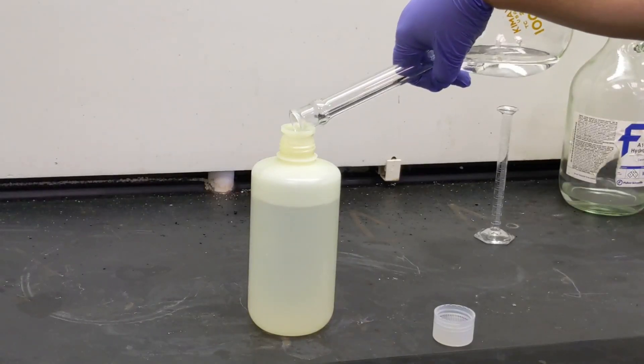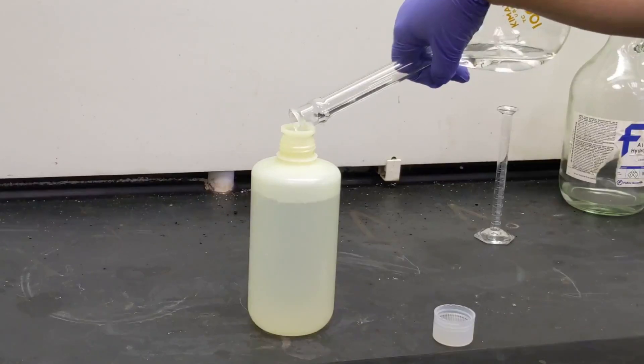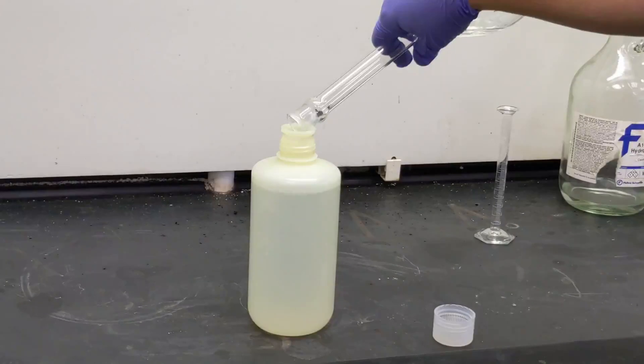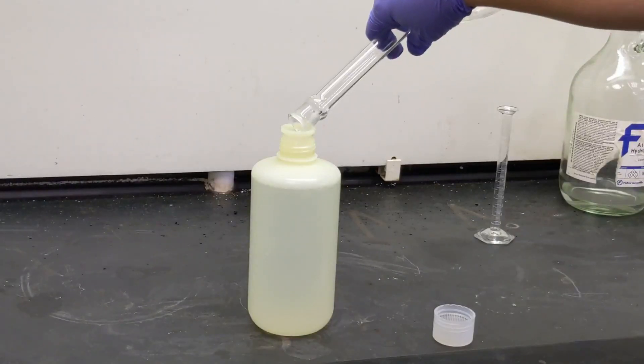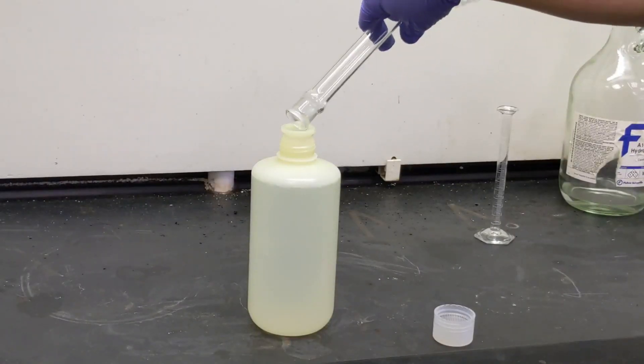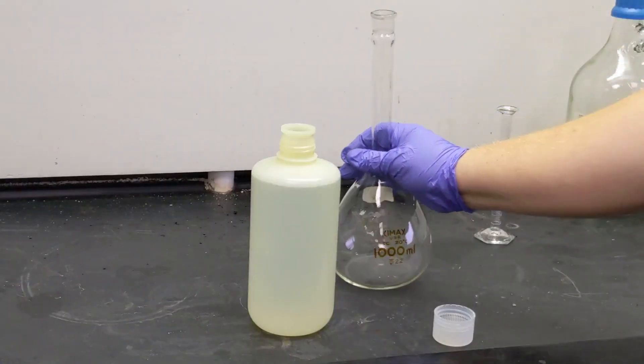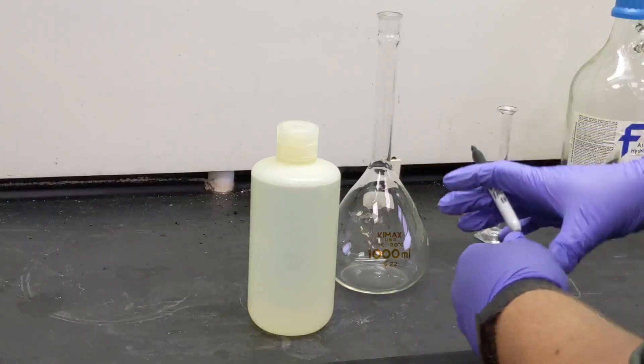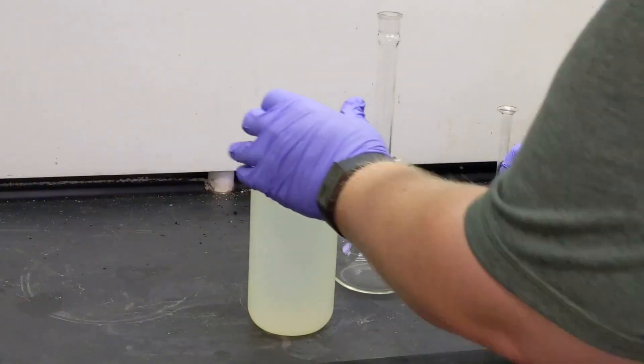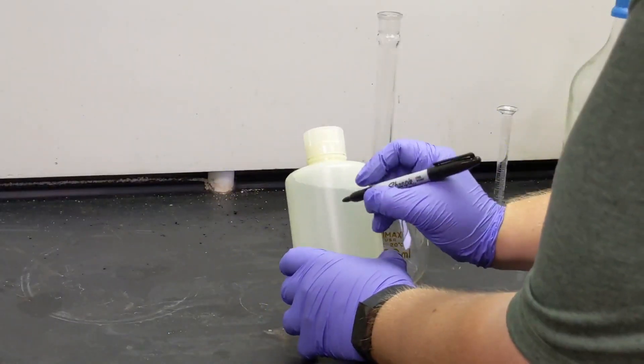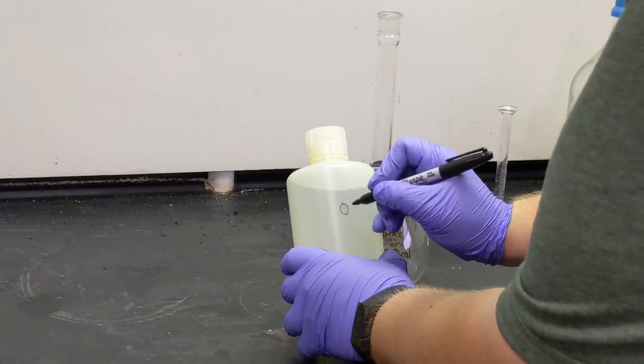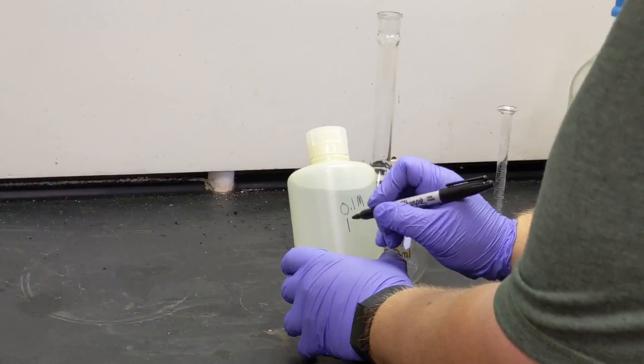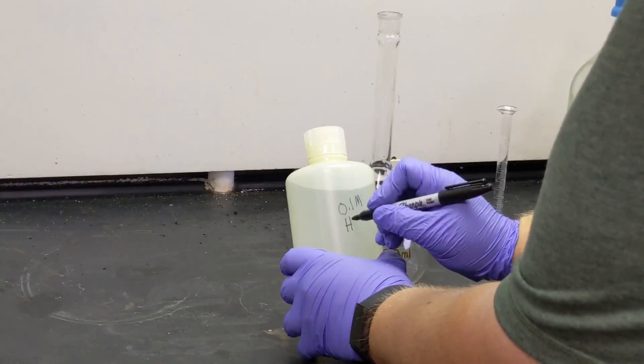Now we have almost all of our acid in the Nalgene container. Cap the bottle and the very last thing we need to do is label it with the concentration and formula of the solution. This will be 0.1 molar hydrochloric acid, and that is how we prepare a diluted acid solution.